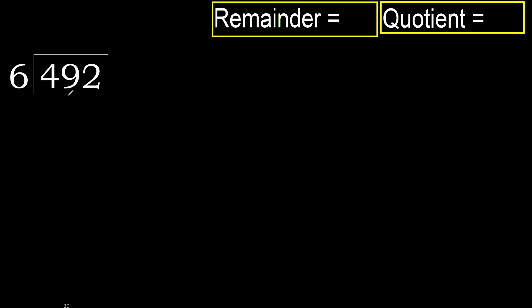492 divided by 6. 4 is less, therefore next. 49 is not less, therefore with 49.